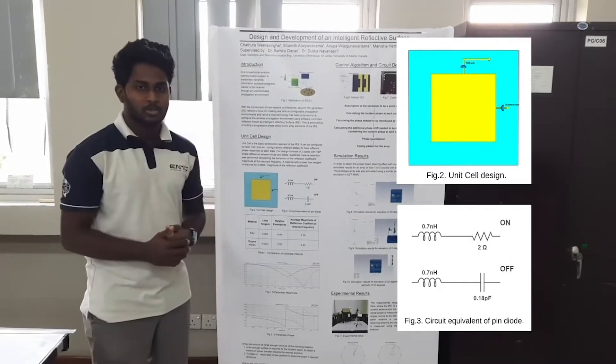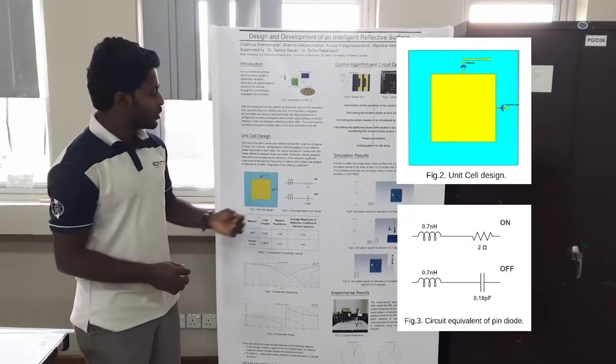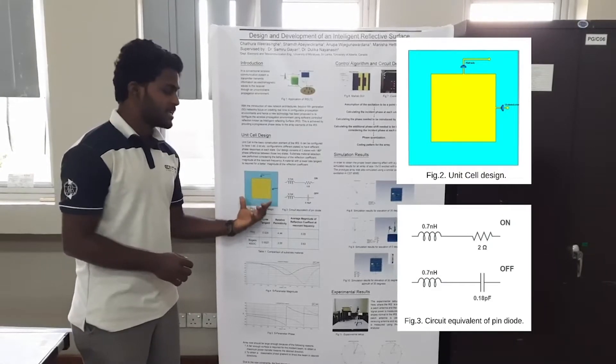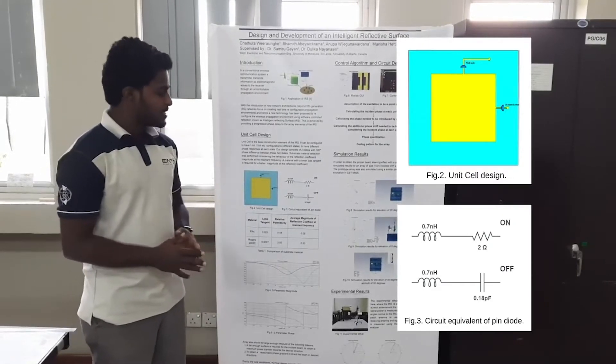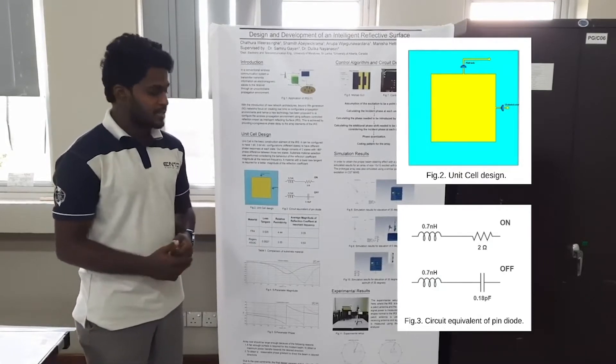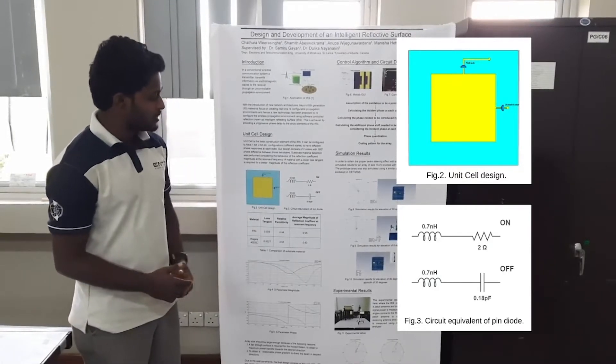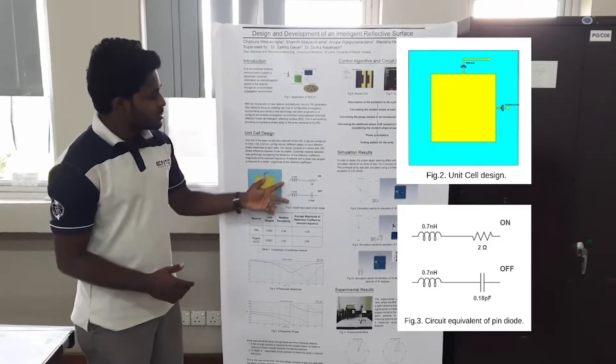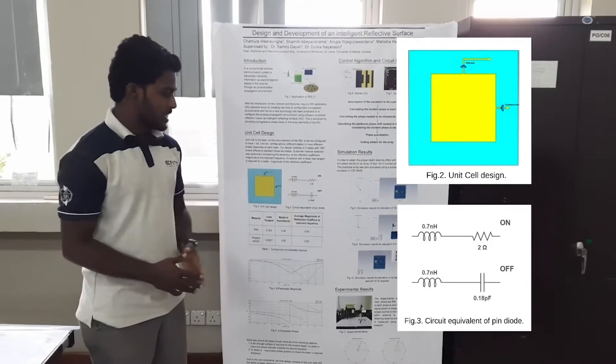So how can we obtain these two states? It is by simply including a diode, a PIN diode, into this unit cell design. When we forward-bias this PIN diode, it has one mode of operation, and when we reverse-bias this PIN diode, it has another mode of operation, which is depicted in these two figures as on and off states of the PIN diode.